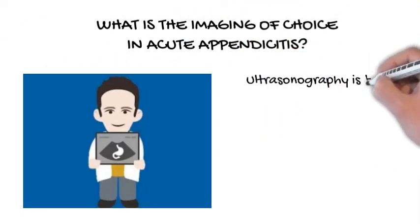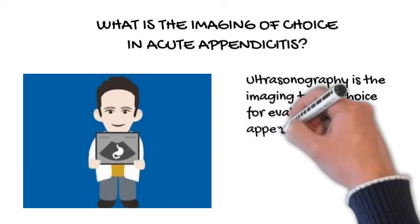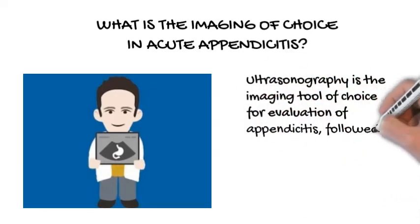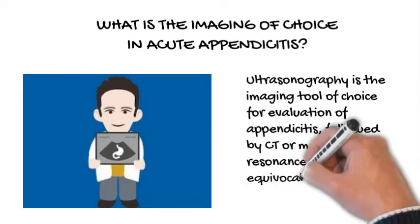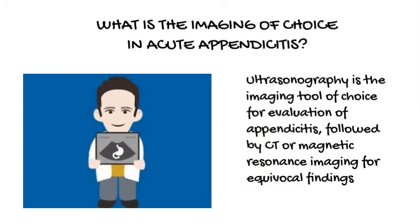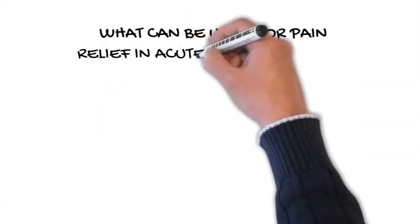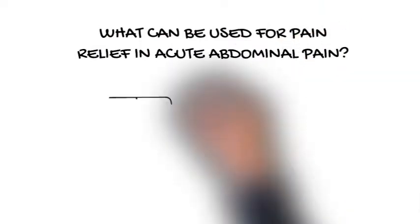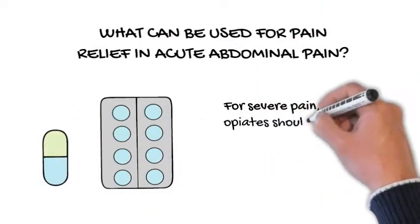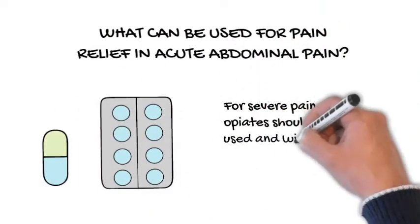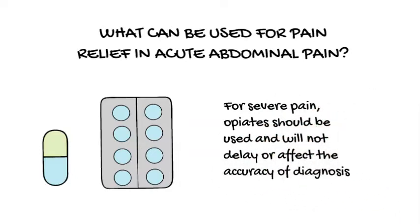What is the imaging of choice in acute appendicitis? Ultrasonography is the imaging tool of choice for evaluation of appendicitis, followed by CT or magnetic resonance imaging for equivocal findings. For severe pain, opiates should be used and will not delay or affect the accuracy of diagnosis.